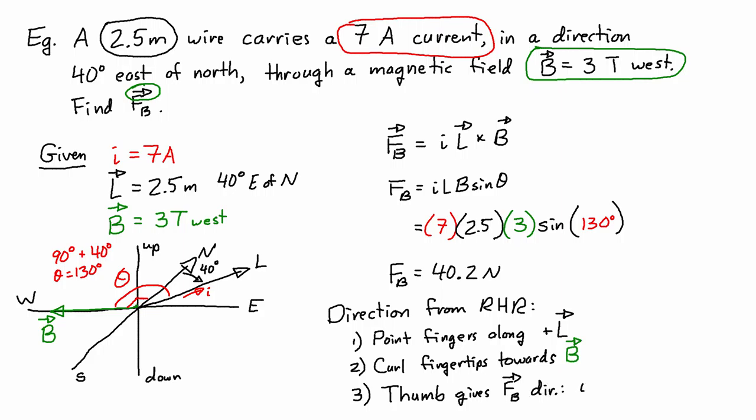And F_B, because it's a cross product, has to be perpendicular to both L and B. So in this case, your thumb is pointing up and F_B is up.